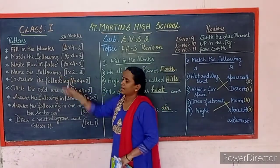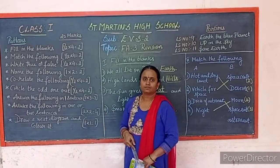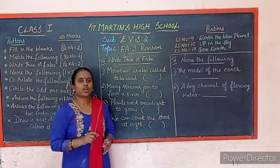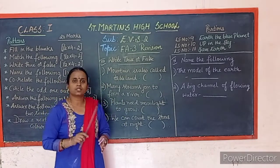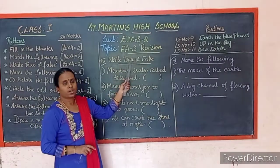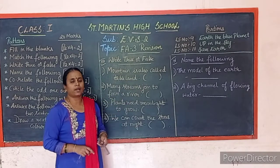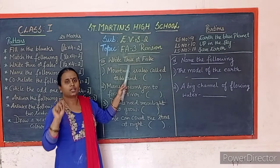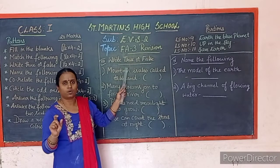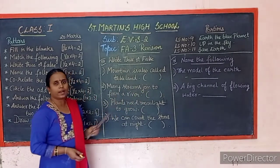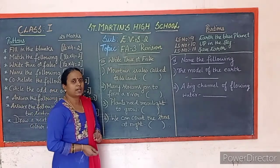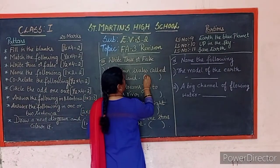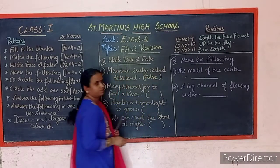True or false: read the question properly and check if the statement is correct. Write the full word — T-R-U-E or F-A-L-S-E — do not just write T or F. For example: 'Mountain is also called table land.' This is false — plateaus are called table land, not mountains. Write: FALSE.